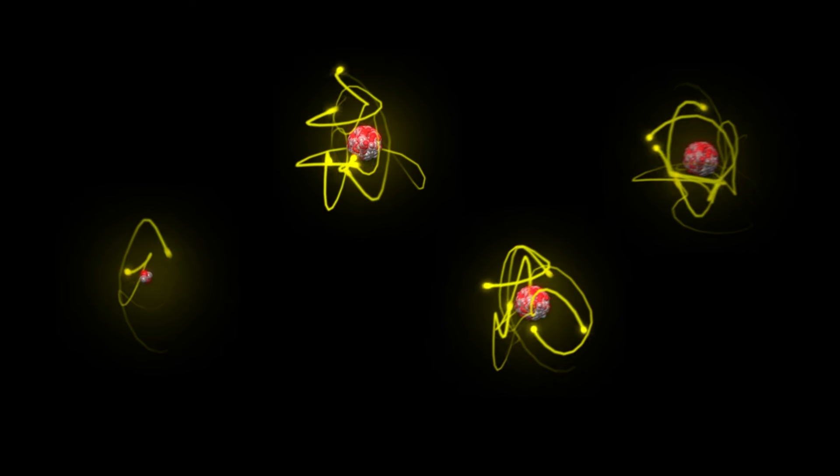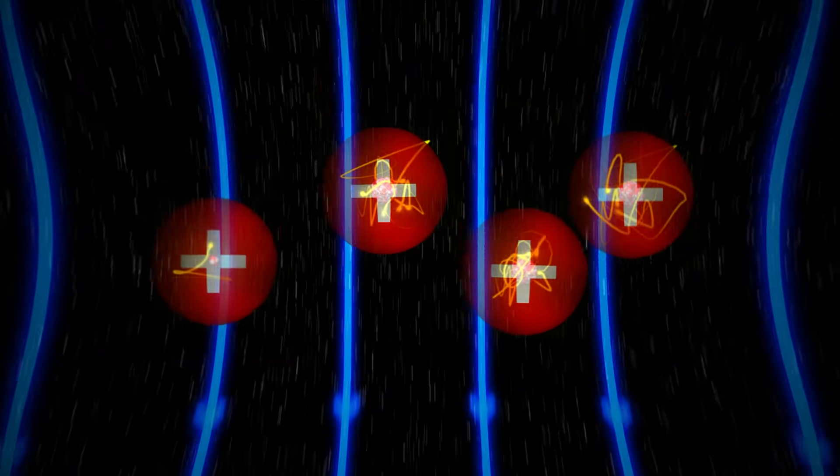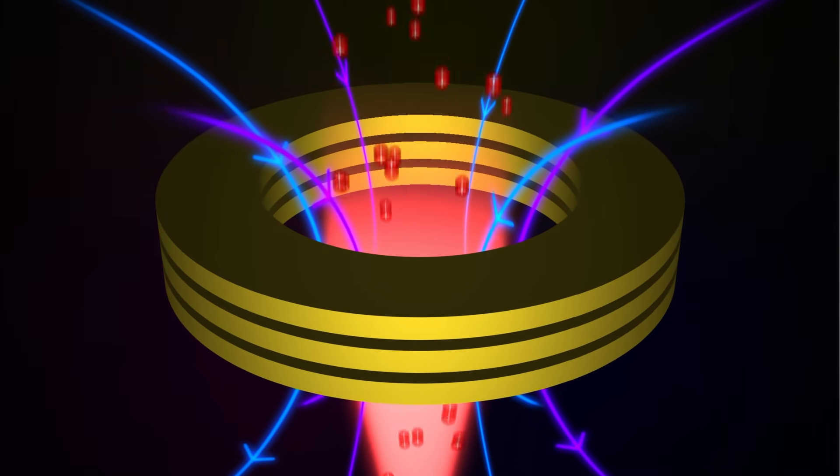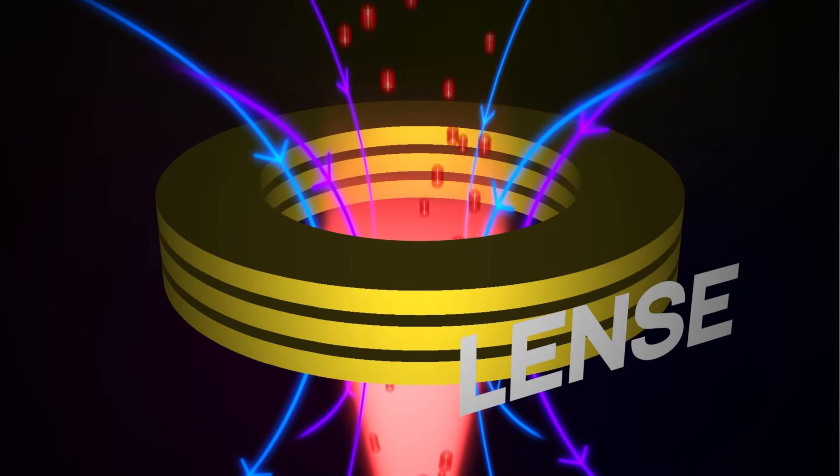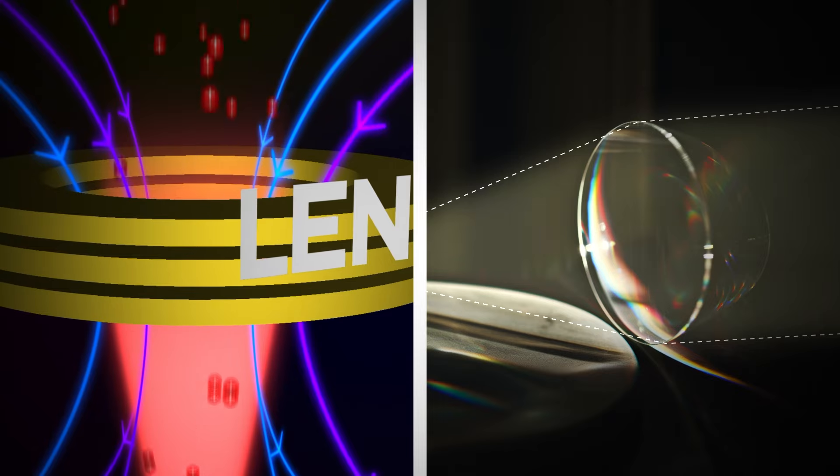Ions, usually positively charged, are extracted from a source and accelerated down a vacuum chamber, where the beam is shaped and focused by electrostatic fields. This is achieved through lenses, which reminds us of how an optical microscope focuses light, but here the lenses are electrostatic.